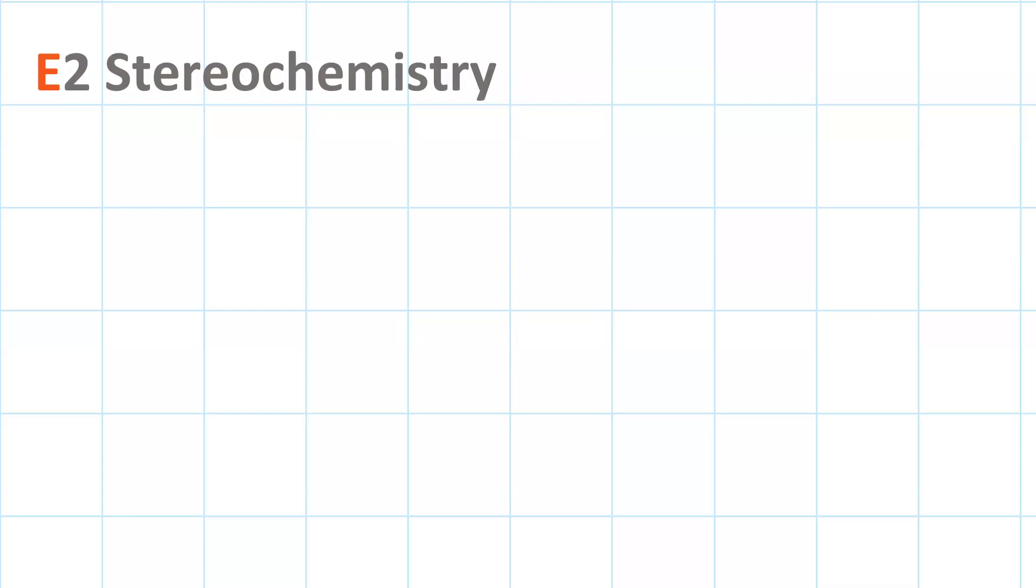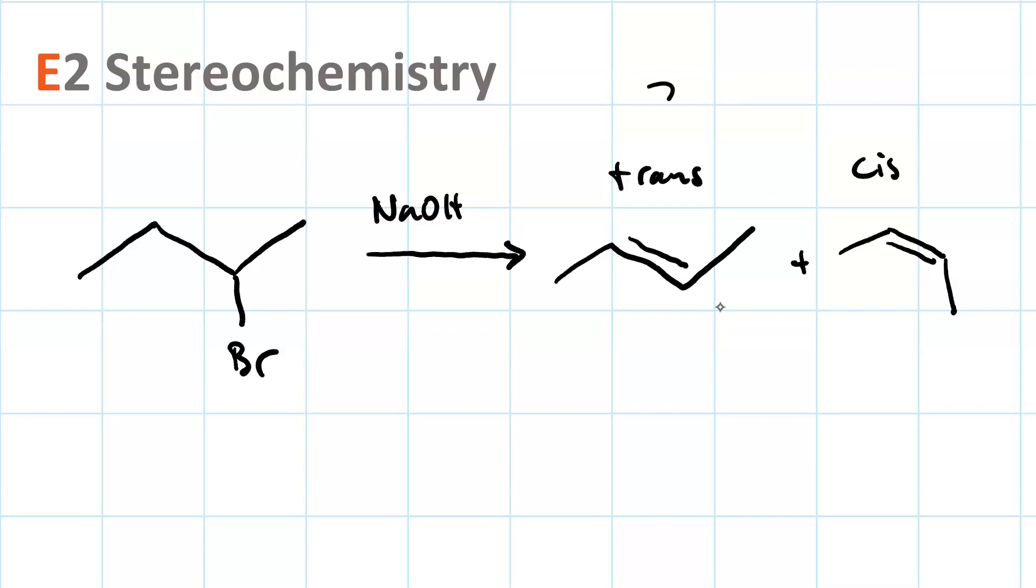Stereochemistry of E2 reactions. So say we've got our 2-bromobutane and we react it with sodium hydroxide. We actually get two Zaitsev products, the trans and the cis.